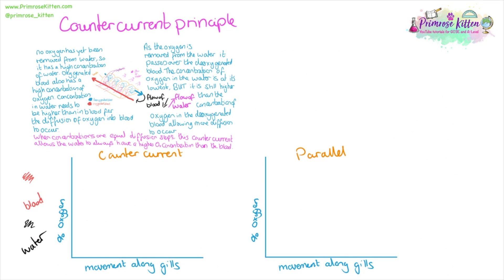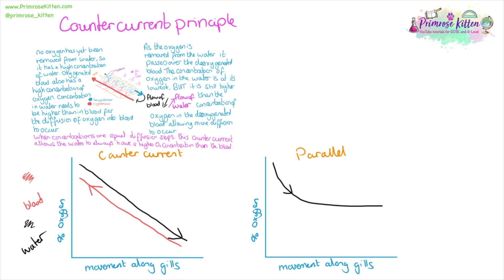Here we are going to compare the counter current principle with a hypothetical parallel situation. This shows the percentage of oxygen moving along the gills. As water moves along the gills, the percentage of oxygen in the water decreases, while it increases in the blood. However, in a parallel situation where the flow of blood and the flow of water are in the same direction, as soon as the concentration of oxygen in the water and blood equalised, diffusion would stop. The percentage of oxygen in the blood would be much lower than in the counter current situation.